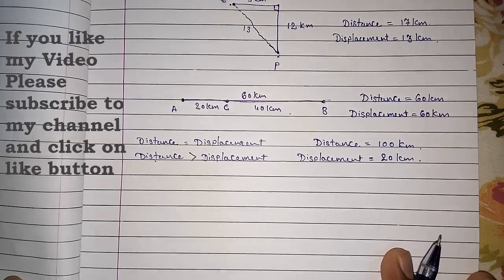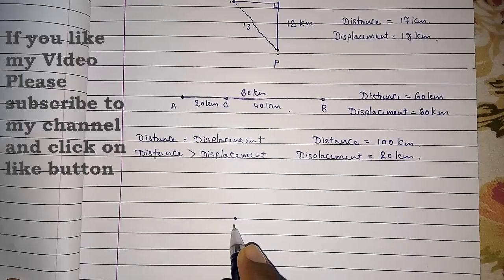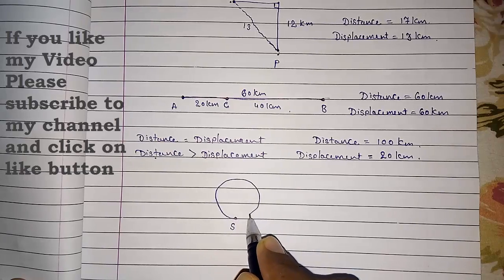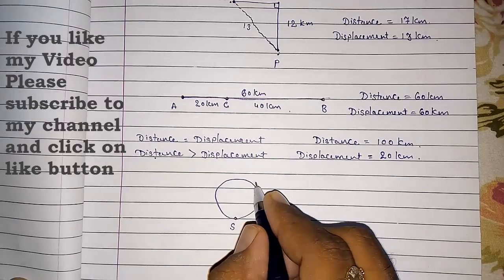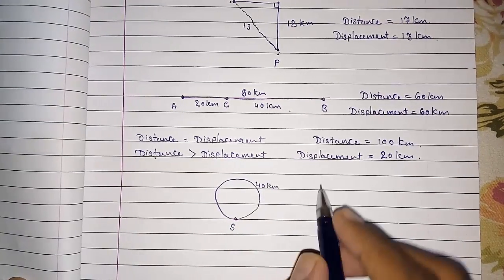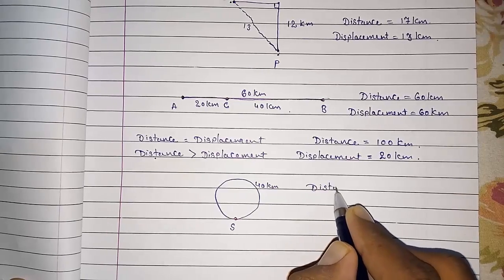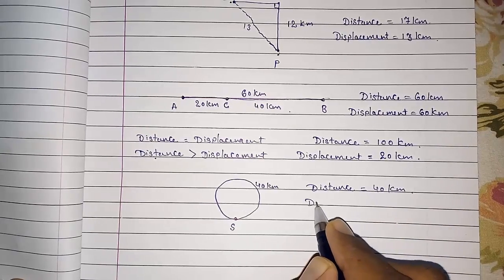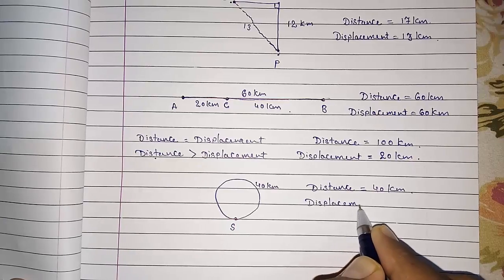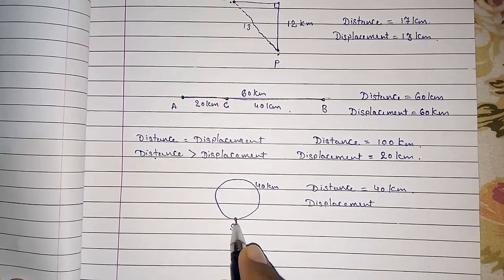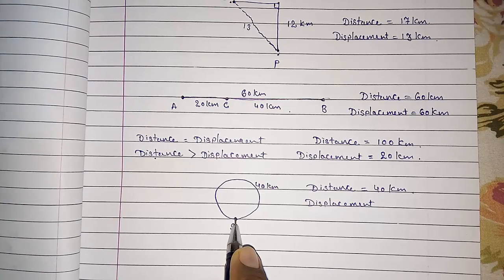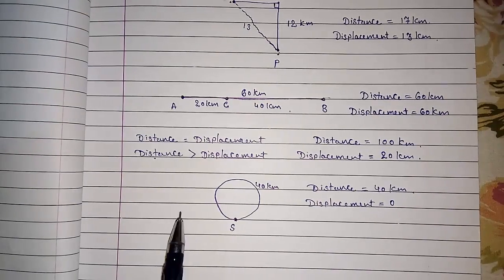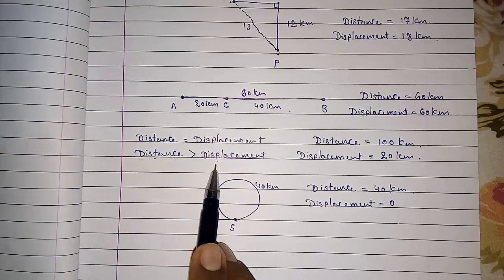Now one more example. From point S, if Ram is moving in a circular path and coming back to the same point, and he moved 40 kilometers — what will be the distance? The distance will be 40 kilometers. Then what will be the displacement? He had started from S and came back, so the starting point and ending point are the same. The displacement will be zero kilometers.